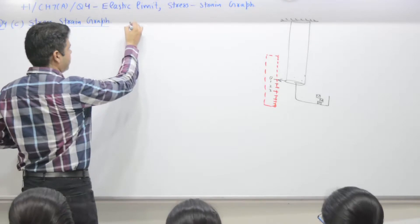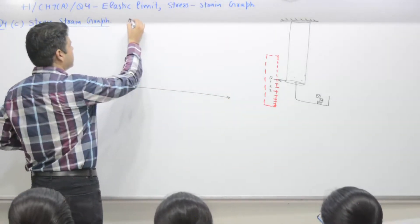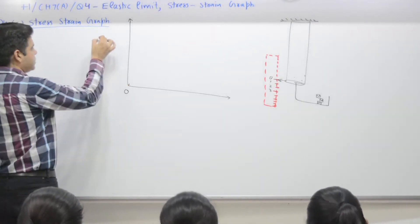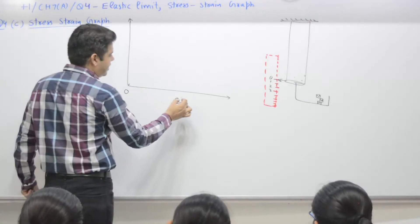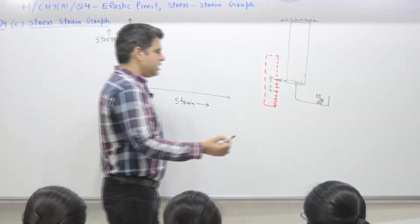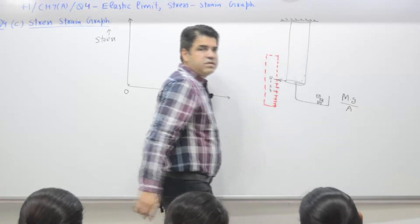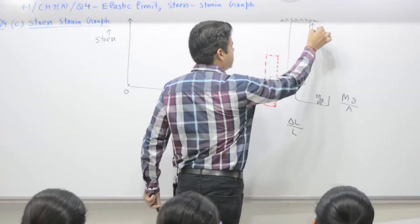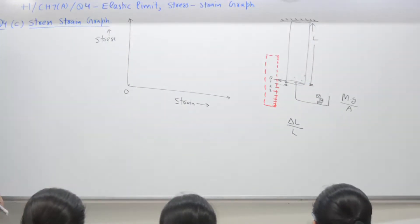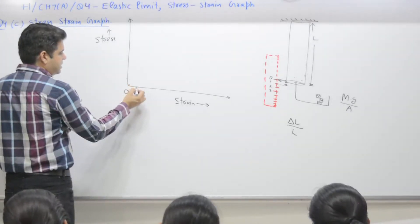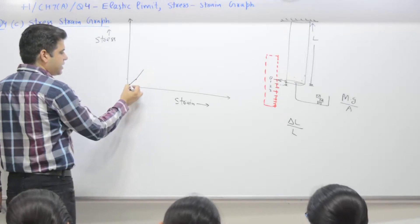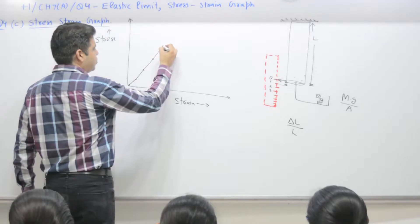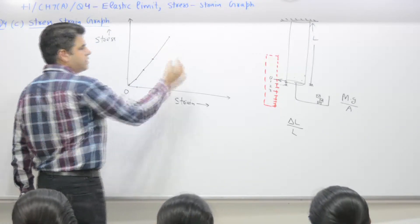We want to plot a stress-strain graph. Point O means stress is 0 and strain is 0. One person in the lab will keep an eye on weight divided by area — that gives stress. Change in length delta-l divided by original length l gives strain. As stress increases, strain also increases; remove the weight it comes back — 2 kg, 3 kg, remove the weight it will come back to original. You can do this up to 5 kg for the given wire — this is the elastic limit.